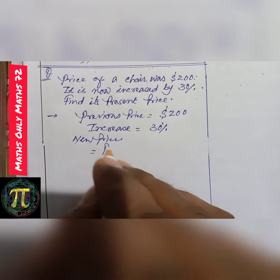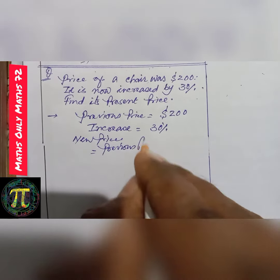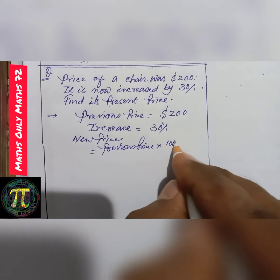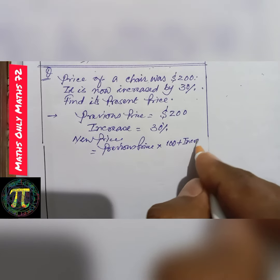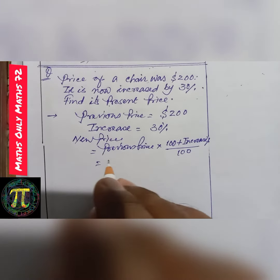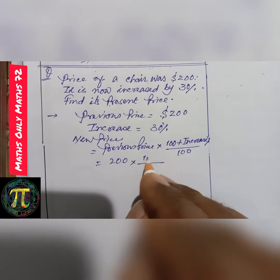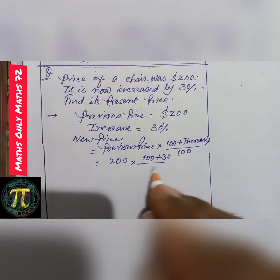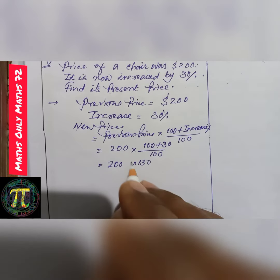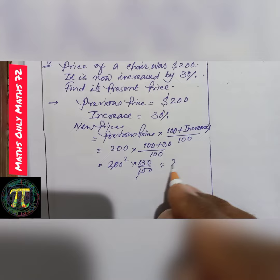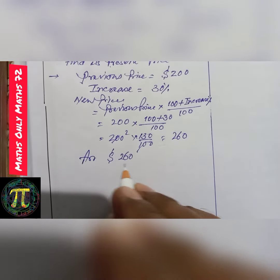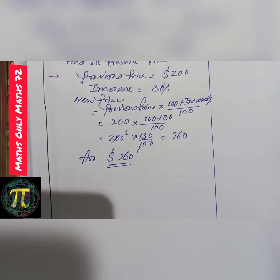New price equals previous price multiplied by 100 plus increase percent, divided by 100. Previous price is 200 dollars, and the increase percent is 30. So: 200 into 130 by 100 equals 260 dollars. The answer is 260 dollars. Thank you.